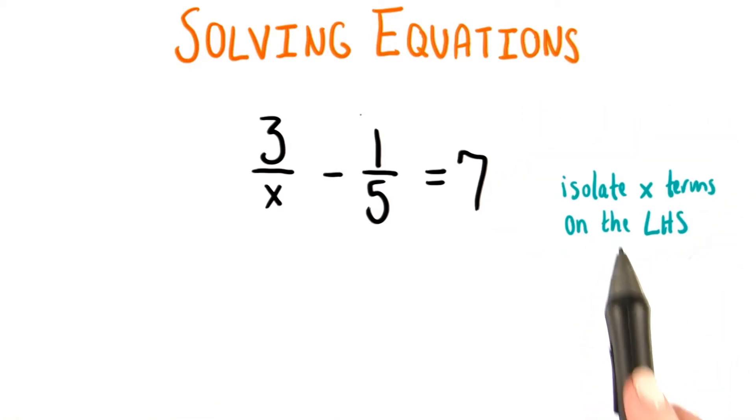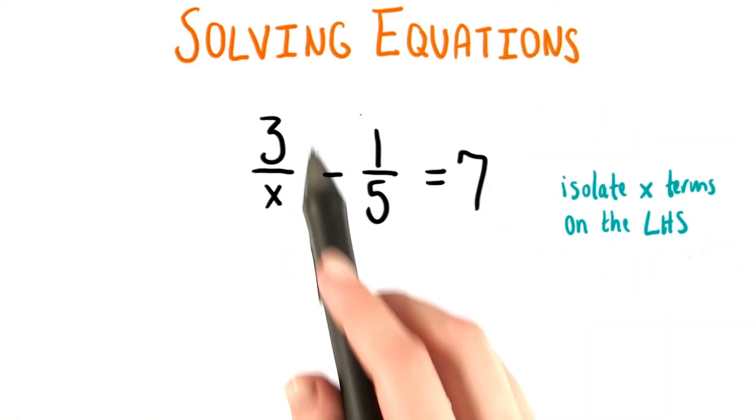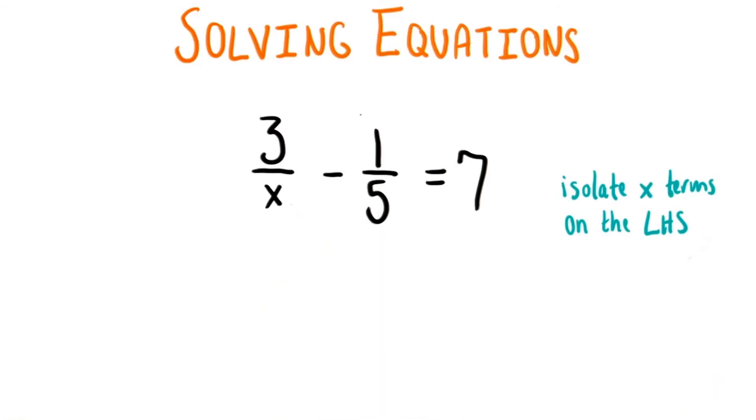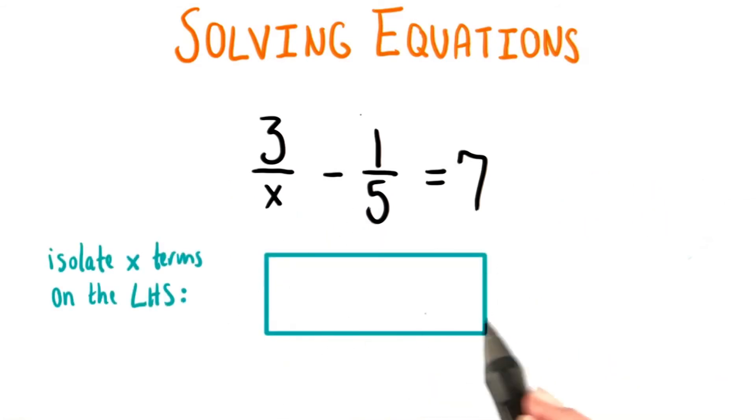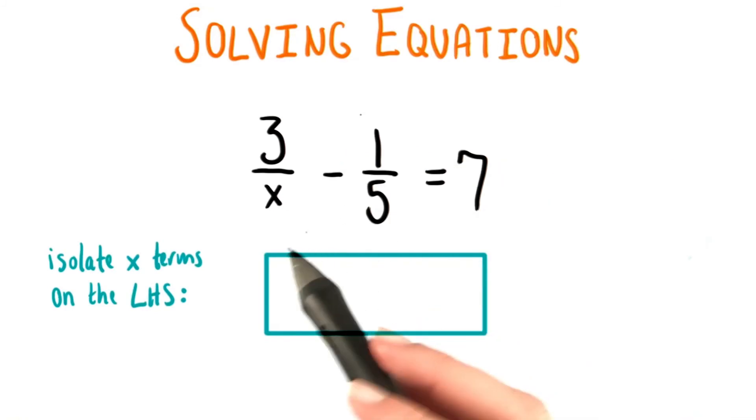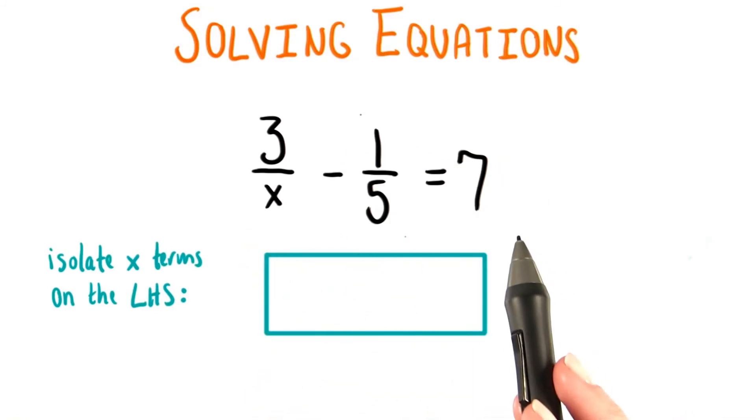So, our goal right off the bat is to get this term by itself on the left hand side. For the equation that I want you to write in this box, I'd like you to isolate the term with x on the left hand side, get everything else on the right hand side, and simplify it so that it's written as an improper fraction. What do you get then?